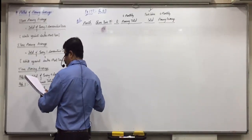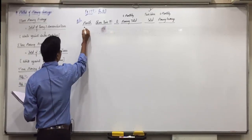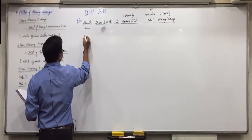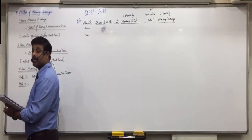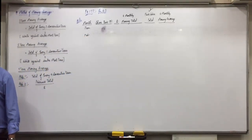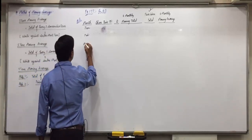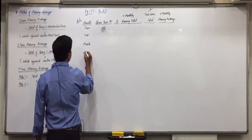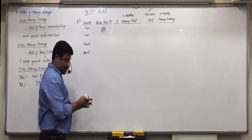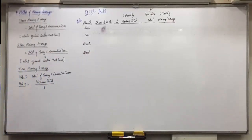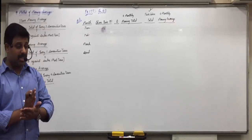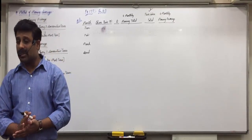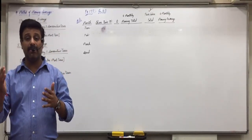Write all the months and share price leaving one line. In exams also, whenever you solve this 4-monthly moving average, as far as possible see that all the figures come on the same page. If you find half a page is over, then start the question from the next page only, because half on one page and half on the next is very difficult to solve.